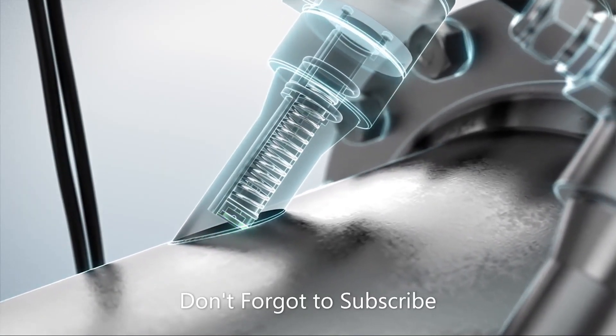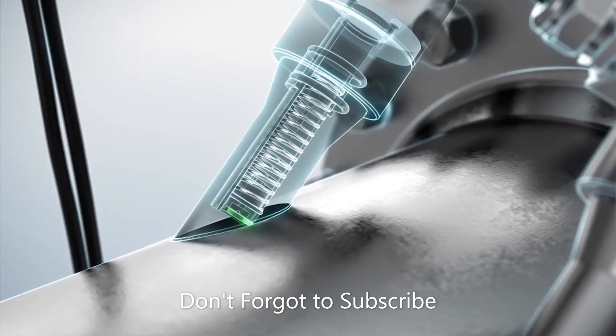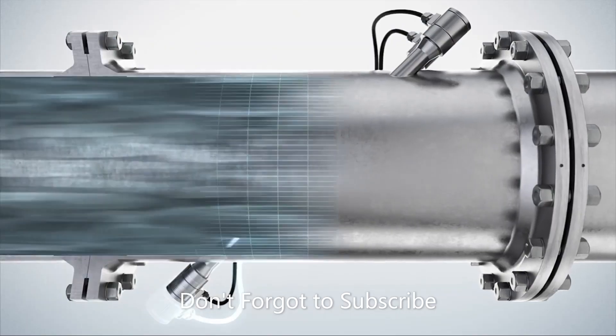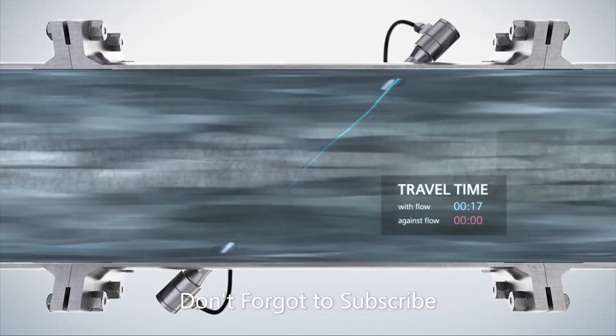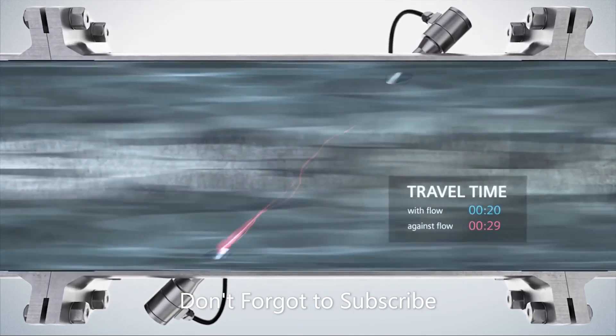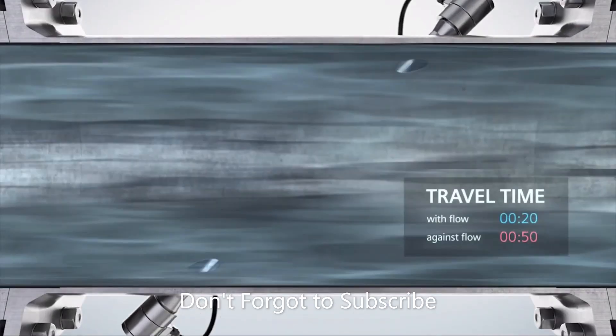Features of ultrasonic flow meter advantages: It does not block the path of liquid flow. The output of the meter varies depending on the density, viscosity, and temperature of the liquid.